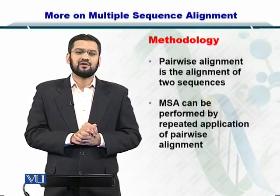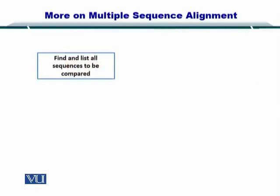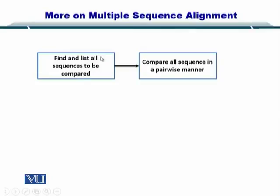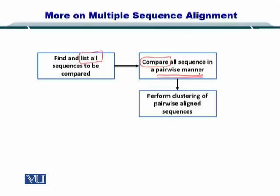Let's take a look at the process in detail, step by step. First of all, you find and list all the sequences to be compared, which can be done by simply finding their ID. Next, you compare the listed sequences and build pairwise alignments. Once you have performed pairwise alignments, you move towards clustering.